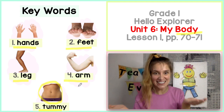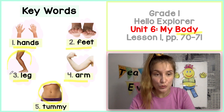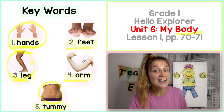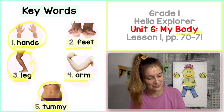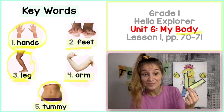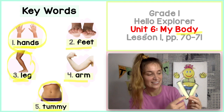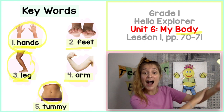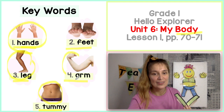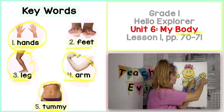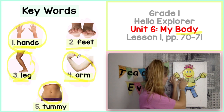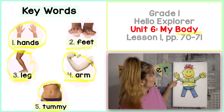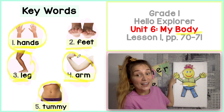Mr. Happy has a tummy, two legs and two hands. What else does he need? He has a tummy, two legs and two hands. So he needs arms and feet. Are these feet? They are not feet. They are arms. Mr. Happy has a tummy, two legs, two arms and two hands.